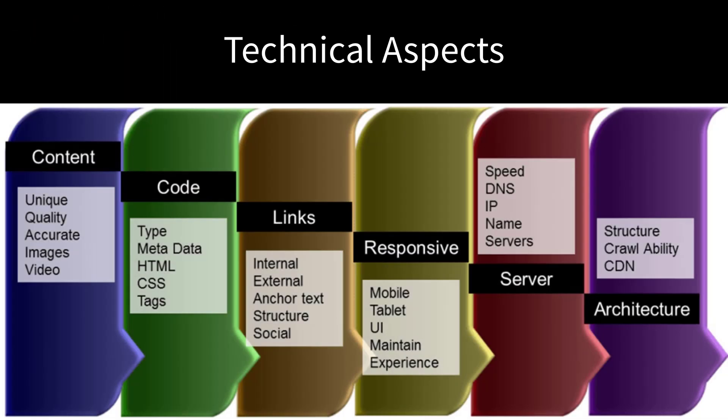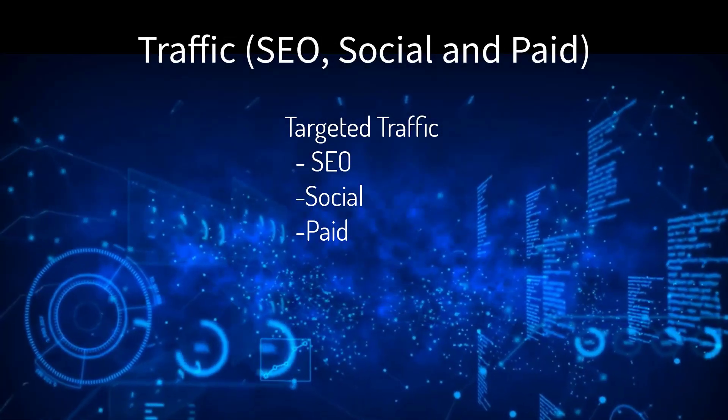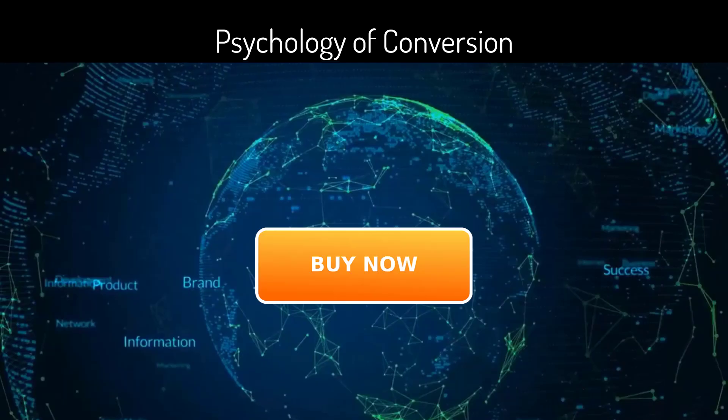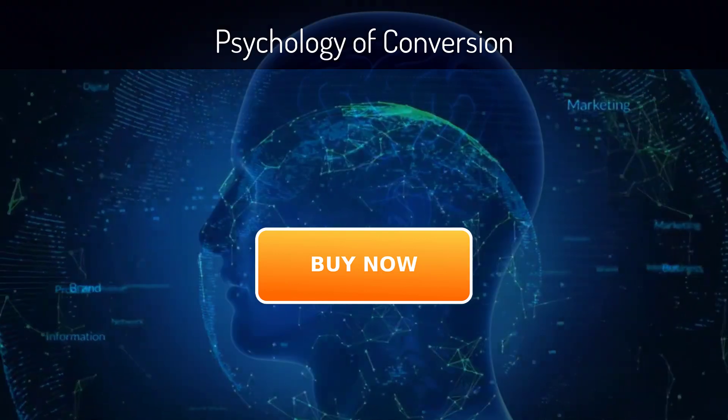Of course, all online marketing must have three elements in alignment: the technical aspects — servers, layout, code structure — the traffic — SEO, social, and paid — and the psychology of conversions.